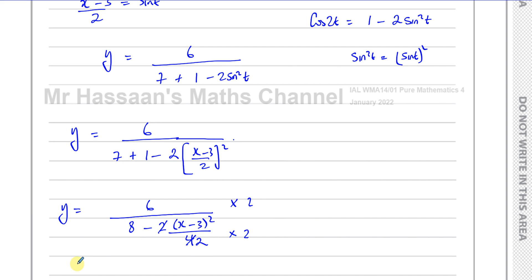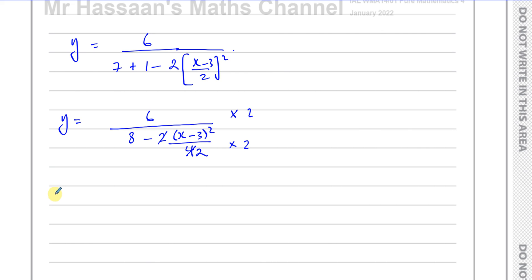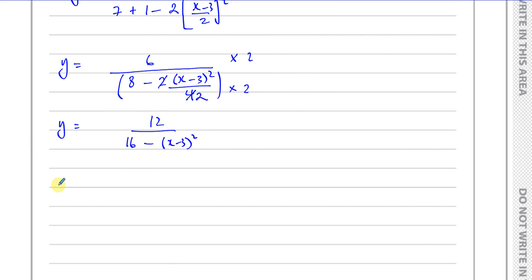I can multiply now both the numerator and the denominator by 2 to get rid of this 2 in the denominator. So this is going to give me Y equals 6 times 2, which is 12, over, if I multiply all of this by 2, I'll have 2 times 8, which is 16, minus X minus 3 squared. And now we can proceed to simplify this.